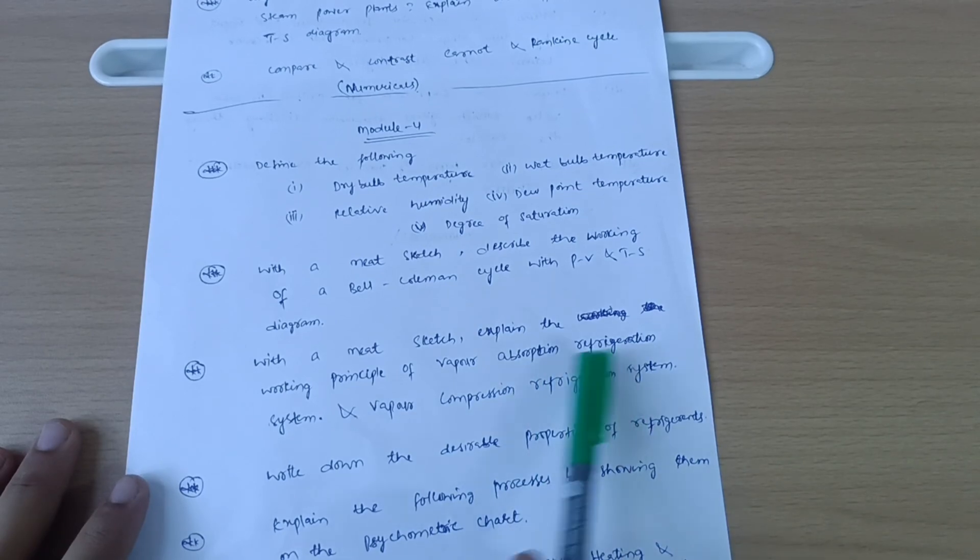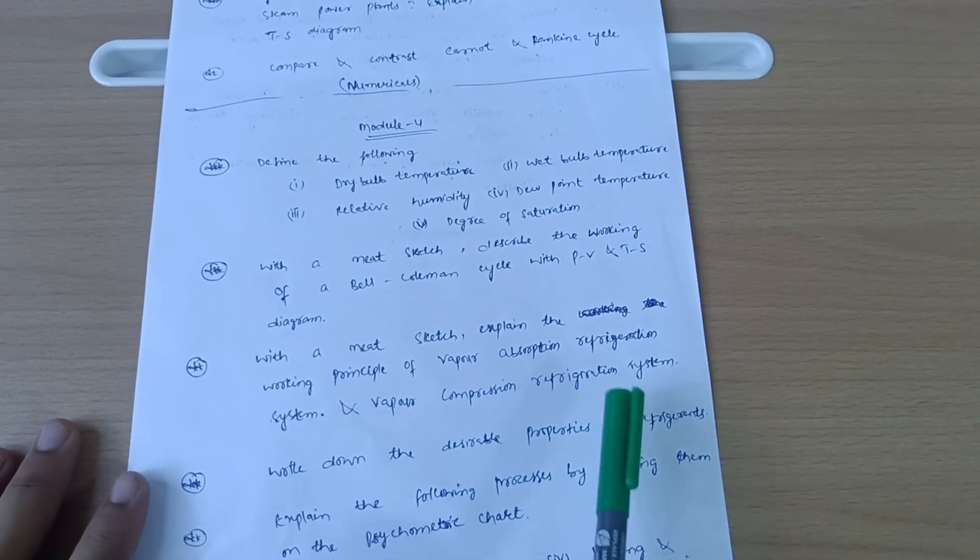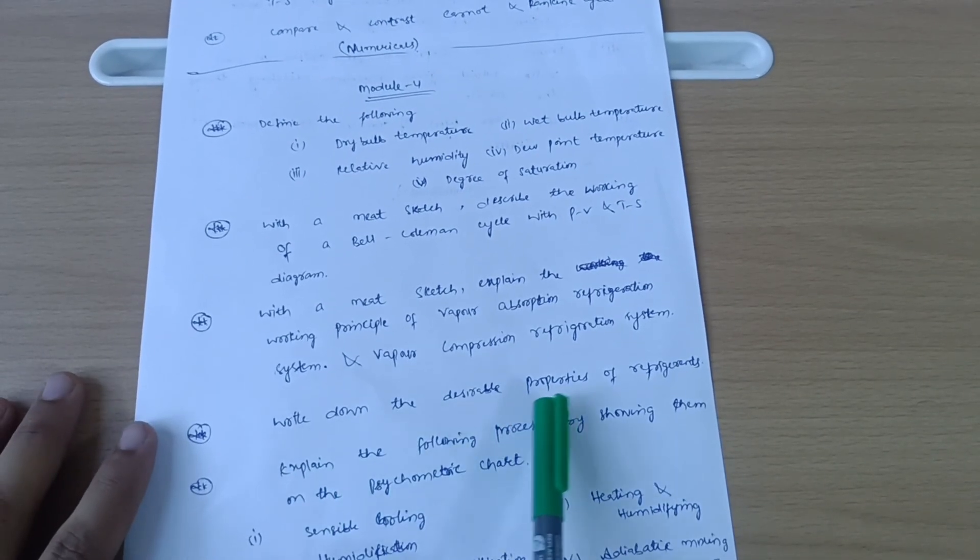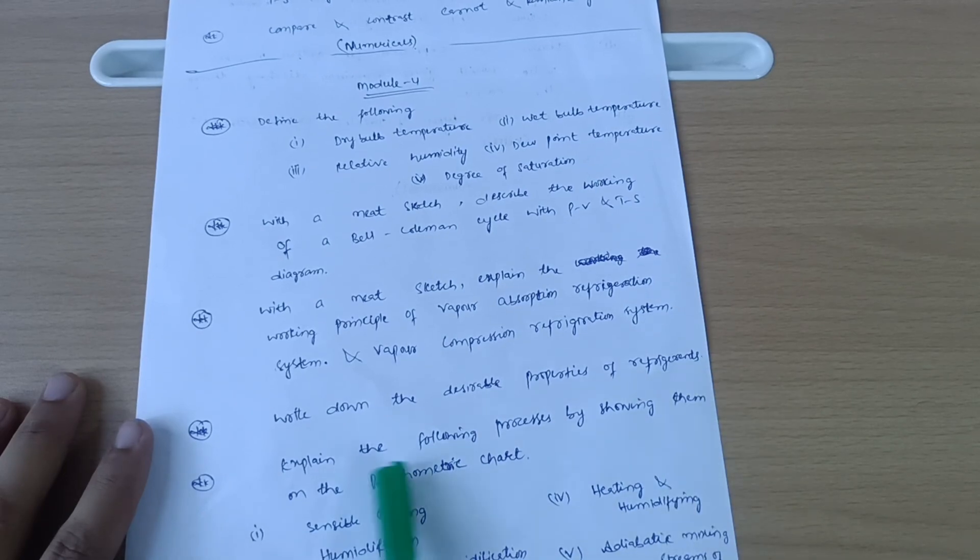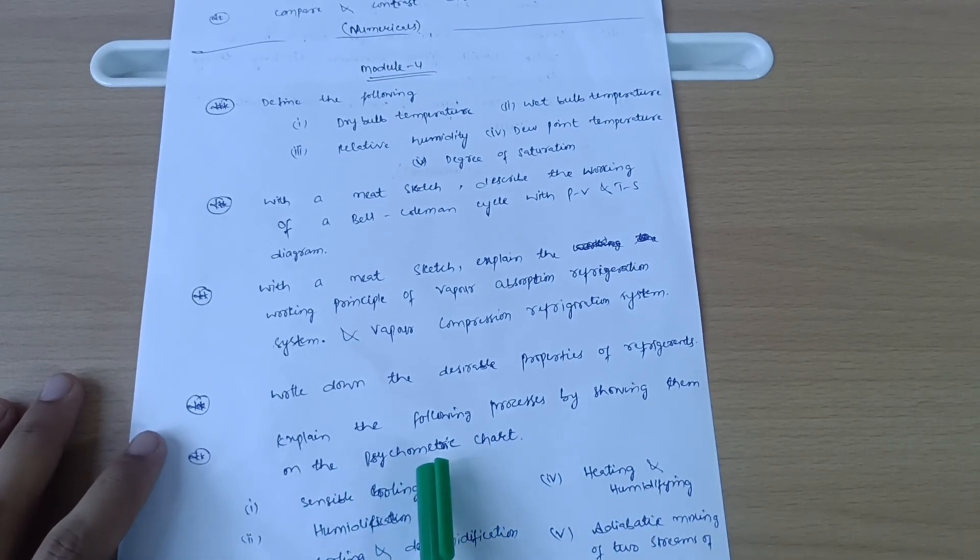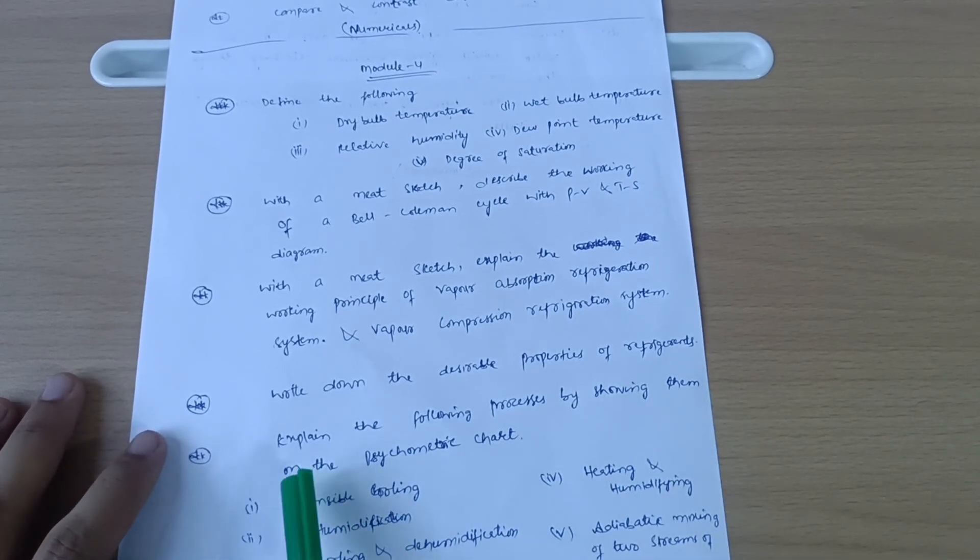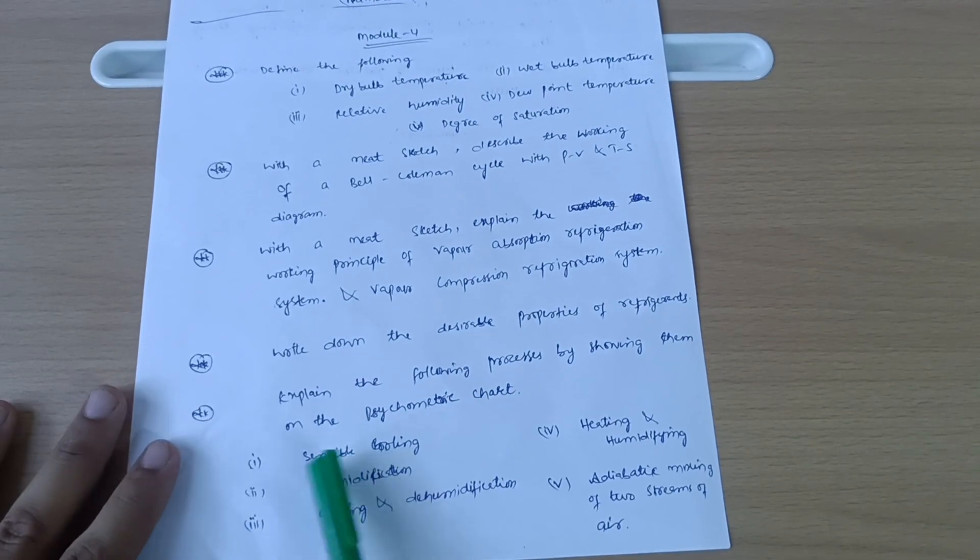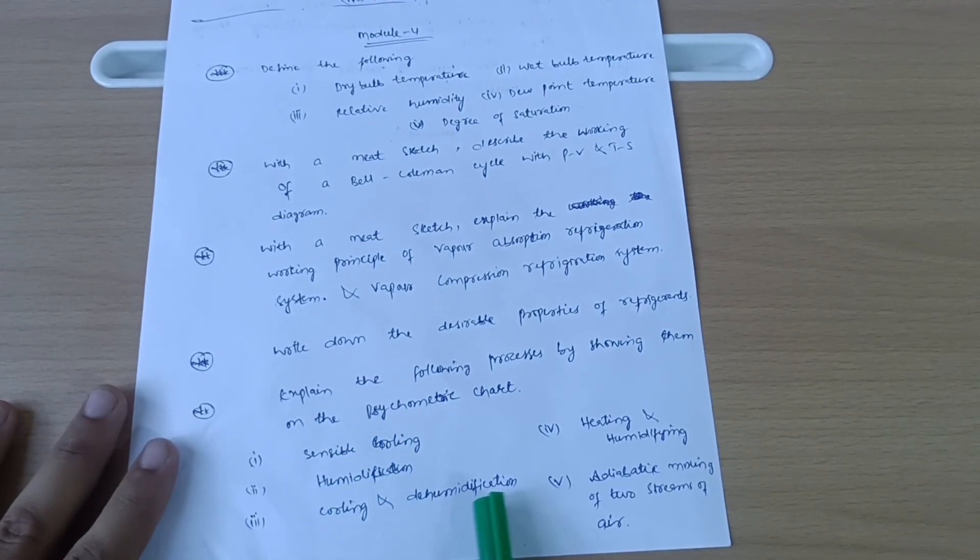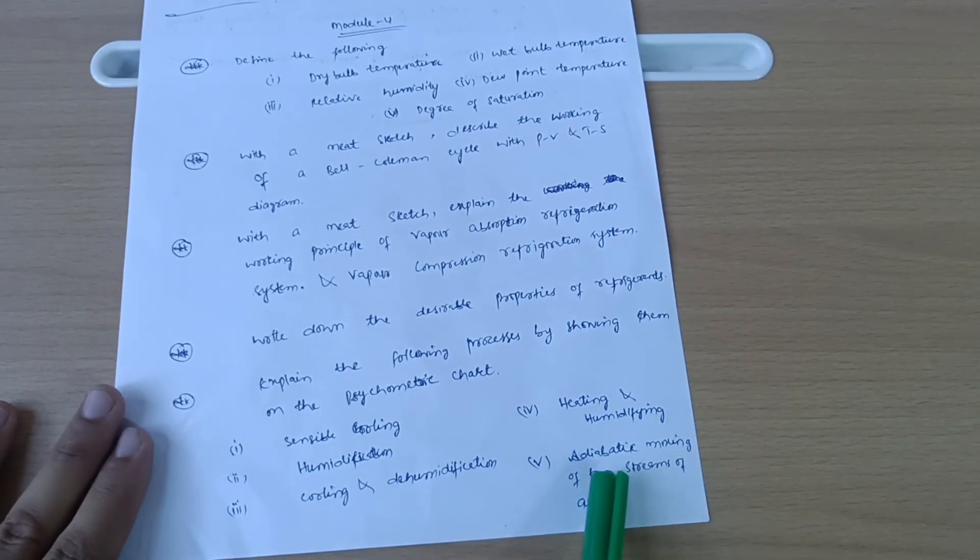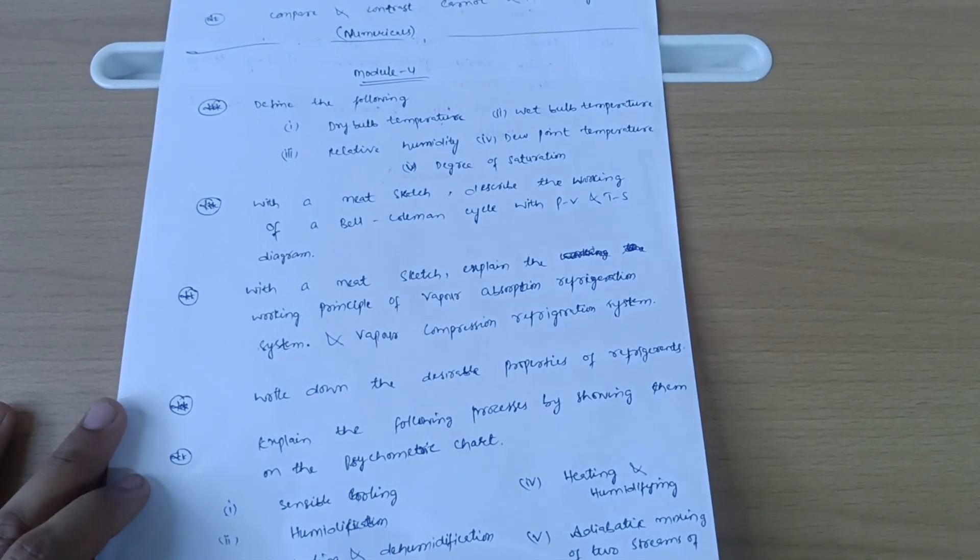Write down the desirable properties of refrigerants. Explain the following processes by showing them on a psychrometric chart: sensible cooling, humidification, cooling and dehumidification, heating and humidifying, adiabatic mixing of two streams of air. You have to explain these terminologies.